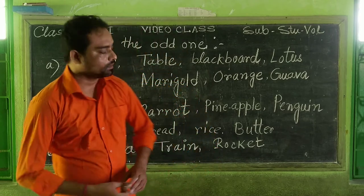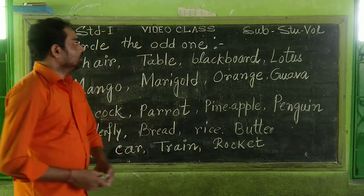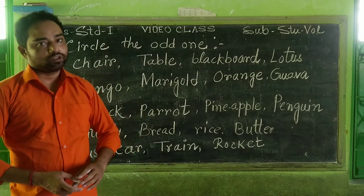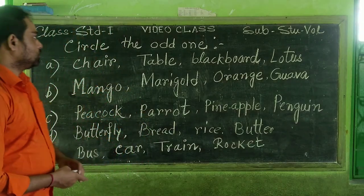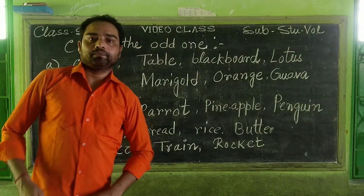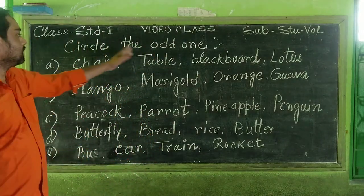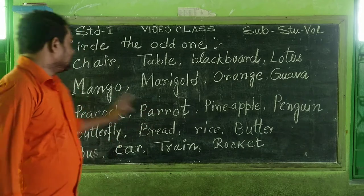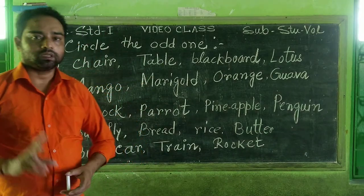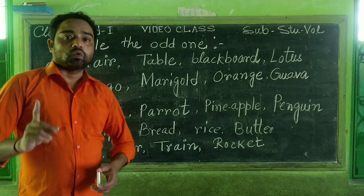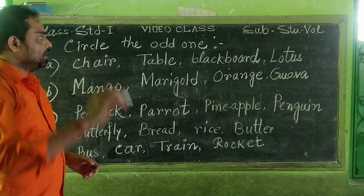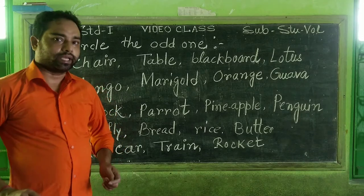Today it is our Satyala Orba class. Today our topic is Satyala Orba. In each line there are four words. One is the odd one out. We must circle that word. Okay?